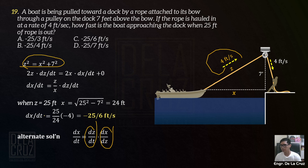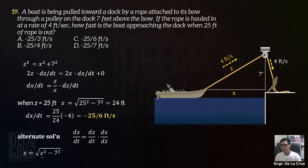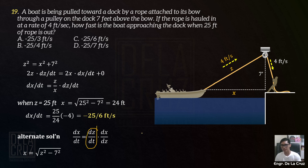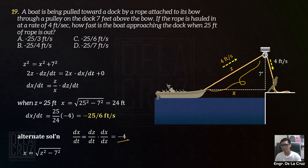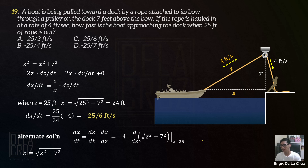So dZ over dT is negative 4 feet per second. What is the dX over dZ? From this equation, kailangan natin makagawa ng equation — X as function of Z. From that, you have X equal to square root of Z squared minus 7 squared. So X is function of Z, and dX over dZ is the derivative of X with respect to Z. So dZ over dT is negative 4 feet per second — negative kasi effect nya is shortening. The dX over dZ: let the calculator differentiate this one. That will give us the same result — negative 25 over 6.